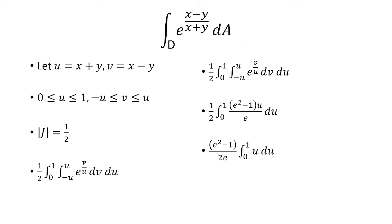And really, the e squared minus 1 over e is a constant, so you can just factor it outside. And so you really just have to integrate u from 0 to 1. And so you end up with the final answer of e squared minus 1 over 4e. And that is our answer.